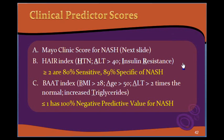There are two other indices called the HAIR index and the BAT index. HAIR stands for H: hypertension, A: ALT (SGPT) more than 40 units, and I: insulin resistance. So HAIR is hypertension, increased alanine transferase or SGPT, and insulin resistance. If two or more of these factors are present, they are 80% sensitive and 89% specific for the diagnosis of NASH.